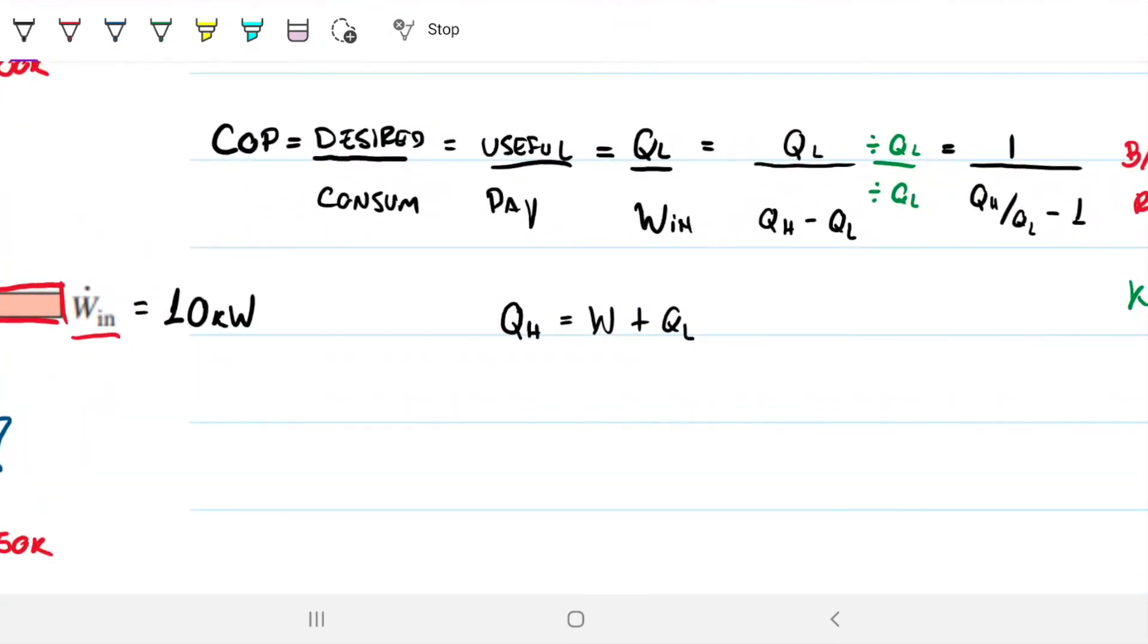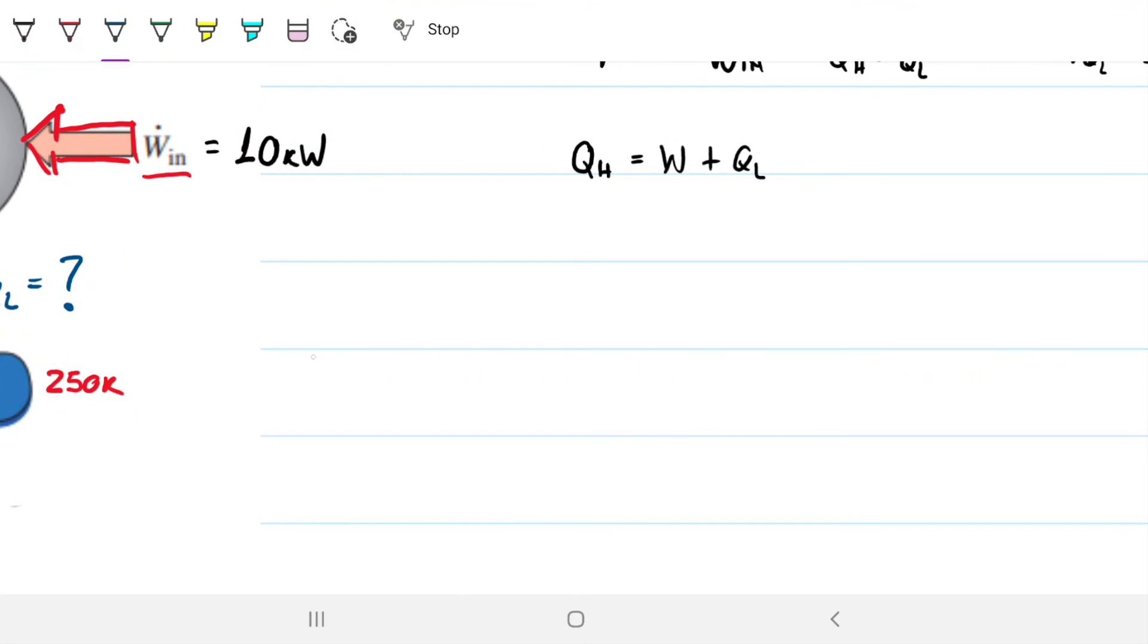Remember that the question is precisely asking us what is QL. So we just found out that coefficient of performance is 5, and we know that it's the QL we're trying to get divided by what we need to put in, which is work.